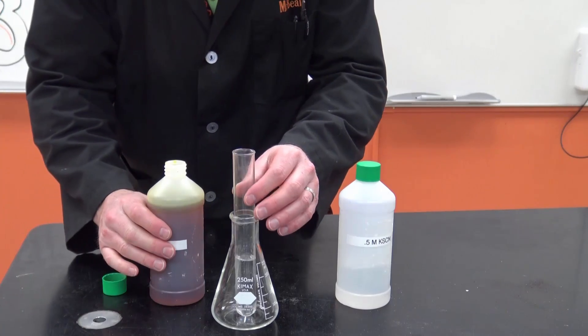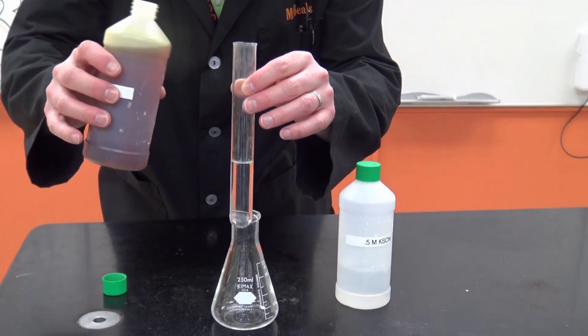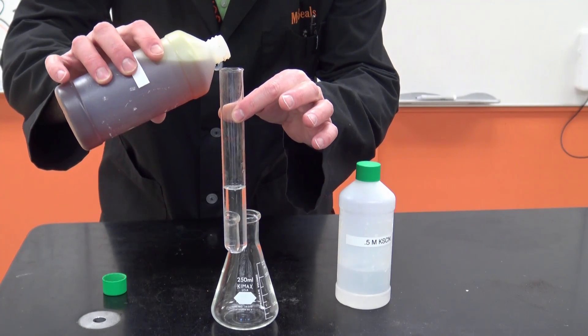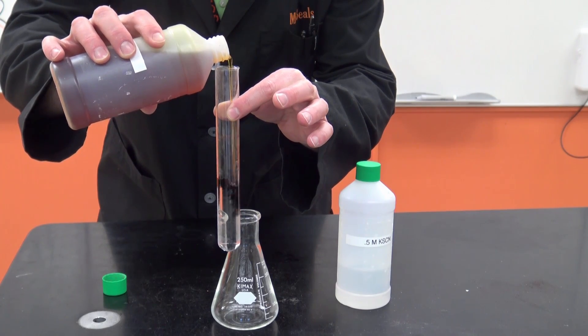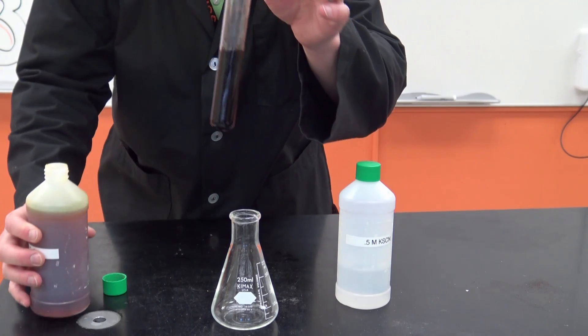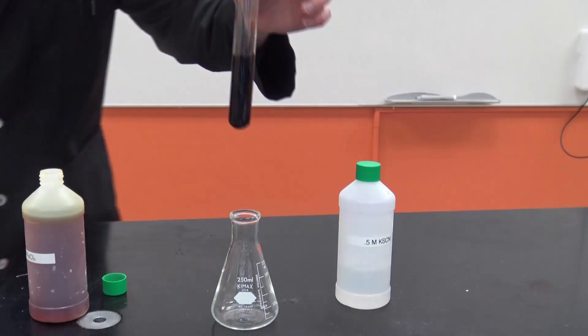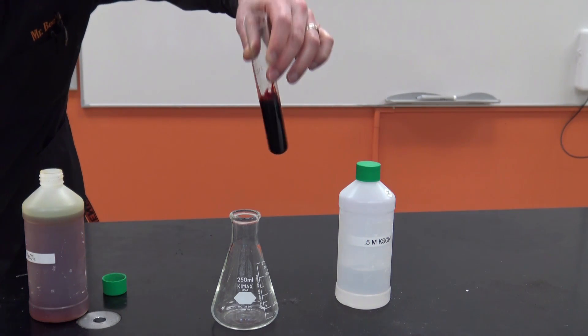And then this is the iron three chloride. I'm dumping that in and as it goes in immediately you get that double displacement or double replacement reaction and it looks just like blood.